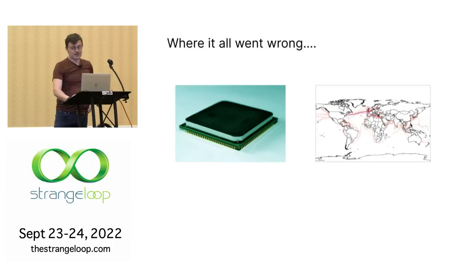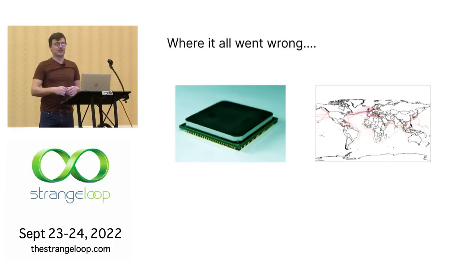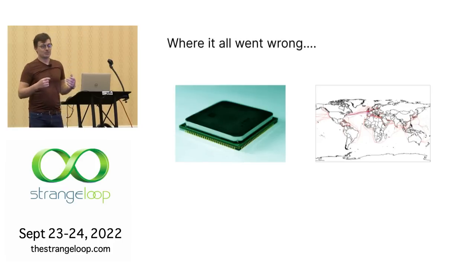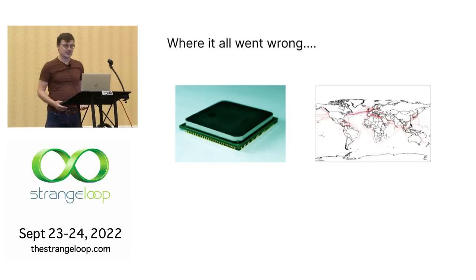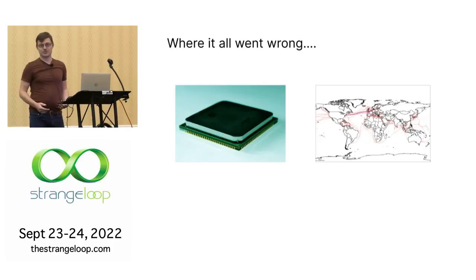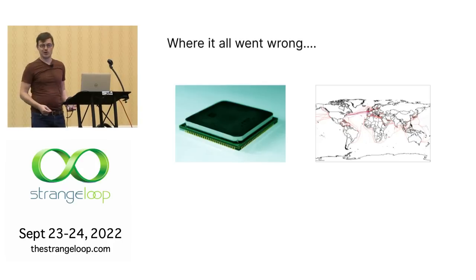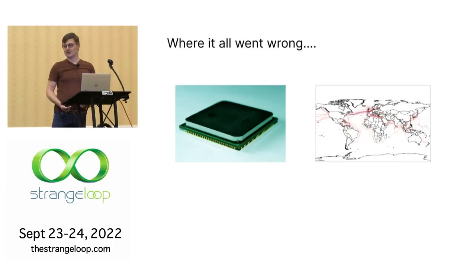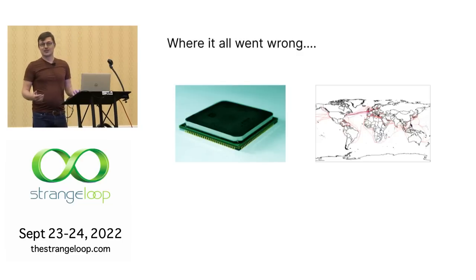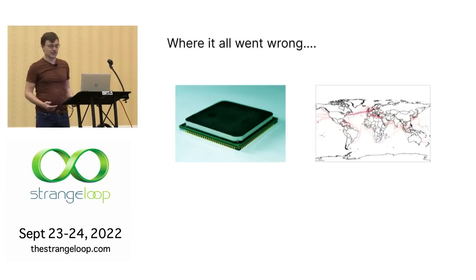But of course, everything goes wrong. People start inventing multiprocessing, multicore processors. We see the growth of the Internet. Suddenly you're dealing with concurrent processes everywhere, with distributed systems. You have to deal with locking and consensus. It's complicated, and I certainly never thought I'd be standing up here talking about consensus algorithms.